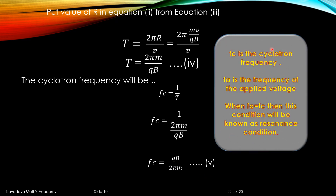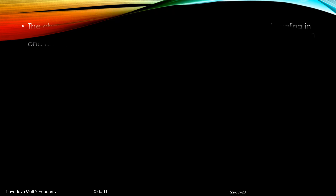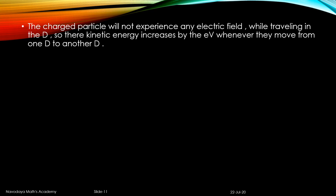Here fc is the cyclotron frequency, fa is the frequency of the applied voltage. When fa equals fc, this condition is known as the resonance condition. The applied voltage also has its own frequency fa. If fa and fc become equal to each other, this condition of the cyclotron is called the resonance condition.